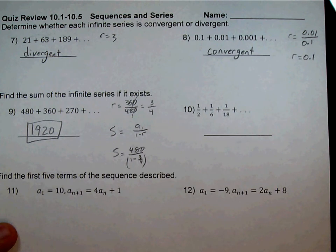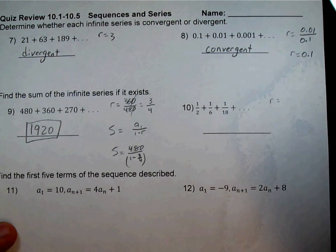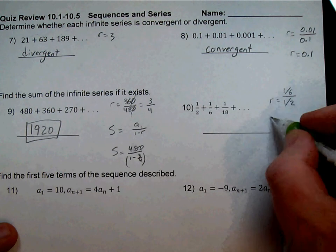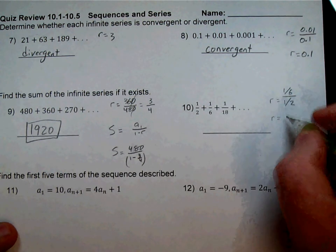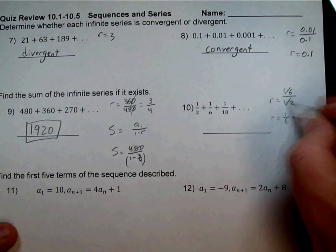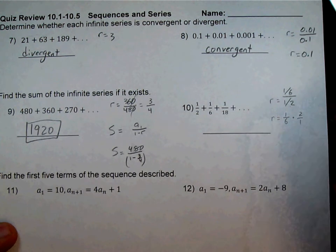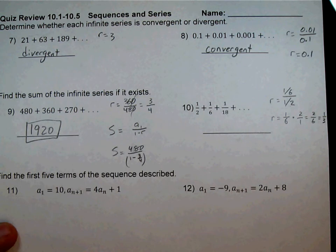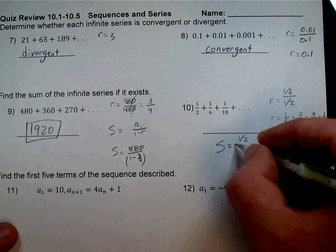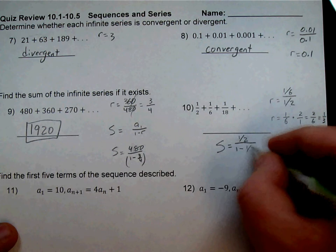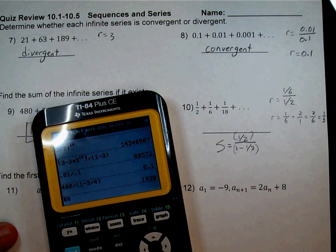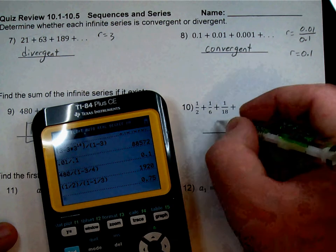Number 10: to find R, take the second term (1 sixth) divided by the first term (1 half). With fractions, multiply by the reciprocal: 1 sixth times 2 over 1 gives 2 over 6, which simplifies to 1 third. Since 1 third is less than 1, it is convergent. Using the formula: 1 half over 1 minus 1 third, giving us 0.75, or 3 fourths.